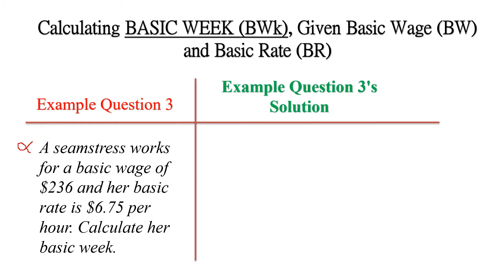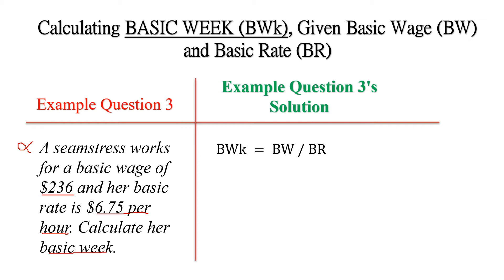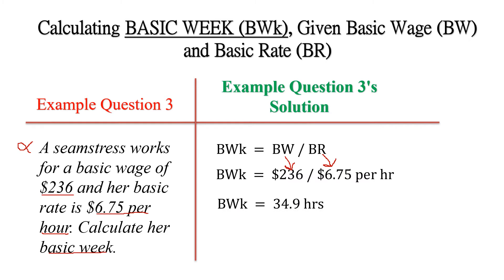A seamstress works for a basic wage of $236.00 and her basic rate is $6.75 per hour. Calculate her basic week. The basic week is equal to the basic wage divided by the basic rate: $236 divided by $6.75 per hour, giving us a basic week of 34.9 hours, or approximately 25 hours.